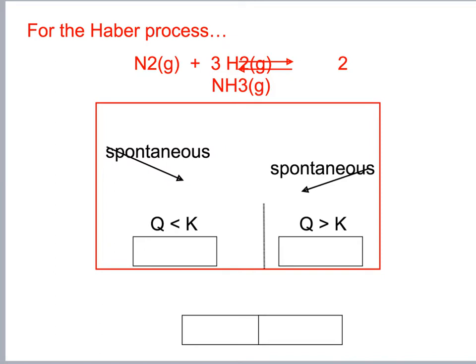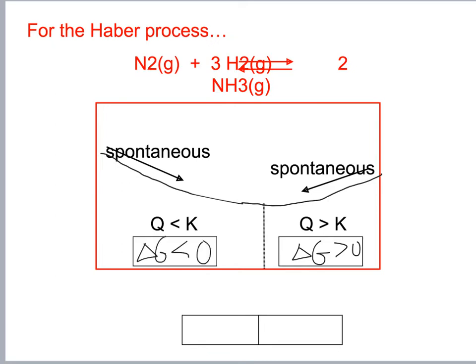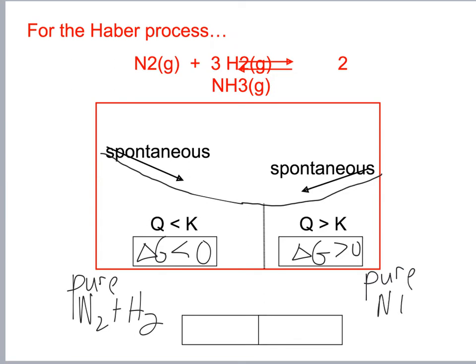Looking at the Gibbs free energy diagram: on the left side with pure N2 plus H2, delta G is greater than zero (non-spontaneous). On the right side with pure NH3, delta G is less than zero (spontaneous). At the dotted line in the middle, we're at equilibrium.